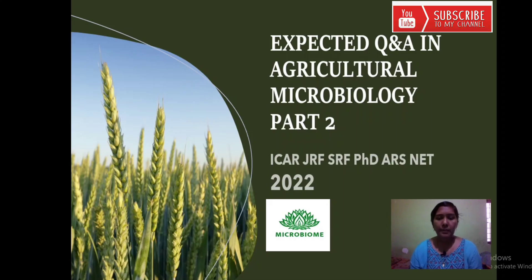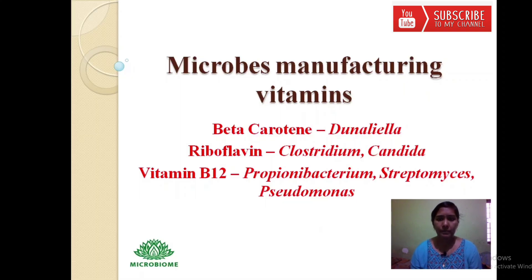Welcome back to part 2 of microbiology questions. The first question covers microbes manufacturing vitamins. Beta-carotene is produced by Dunaliella. In the body, beta-carotene converts into vitamin A, which is helpful for good vision and eye health.